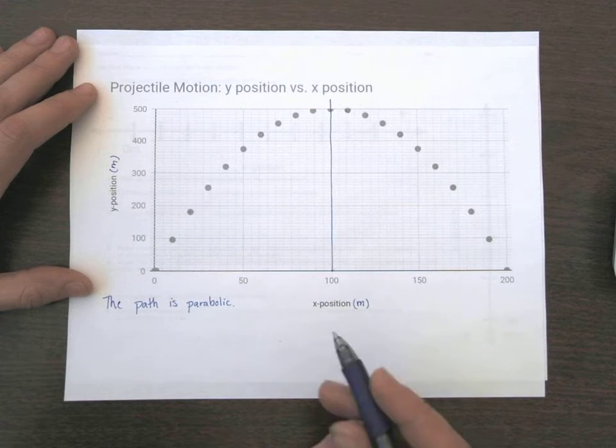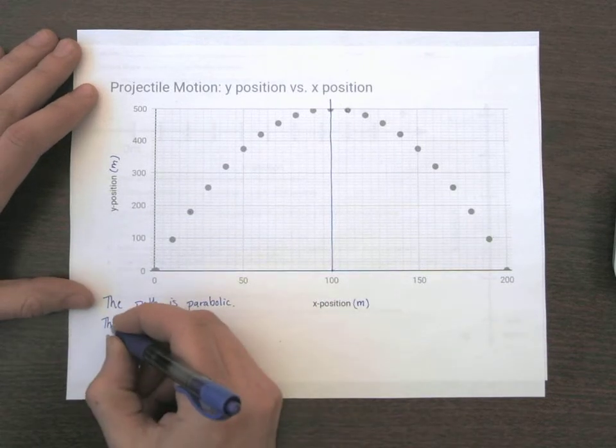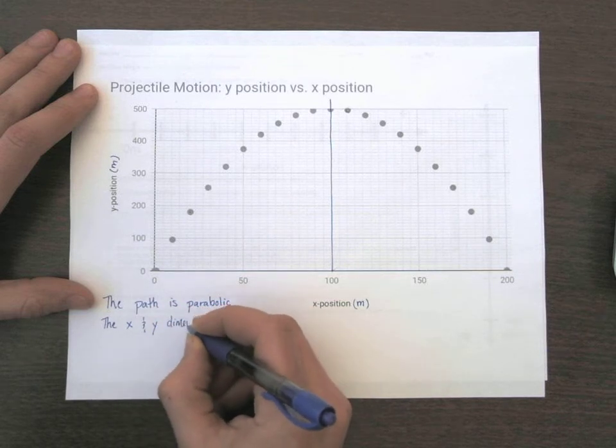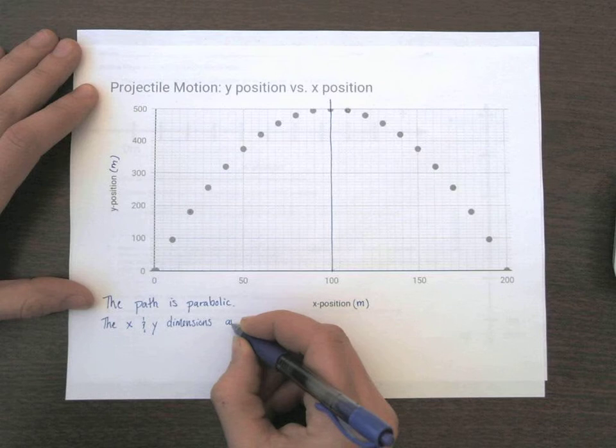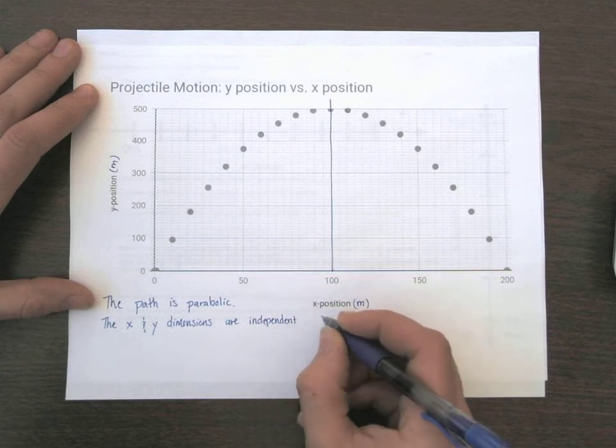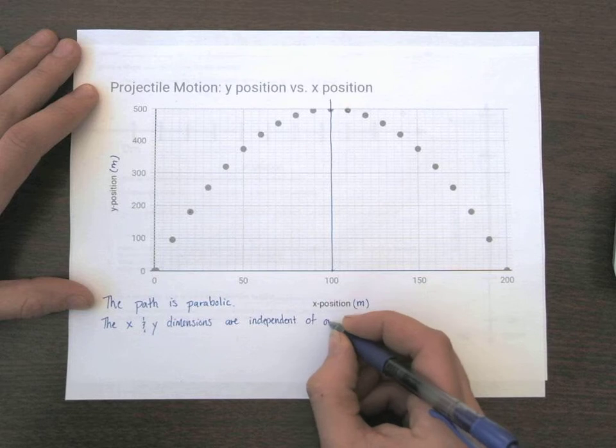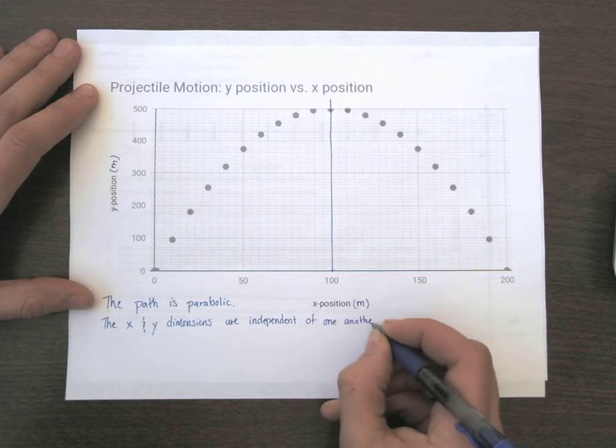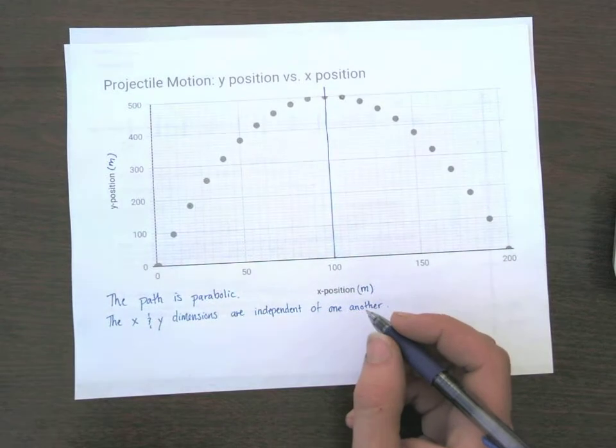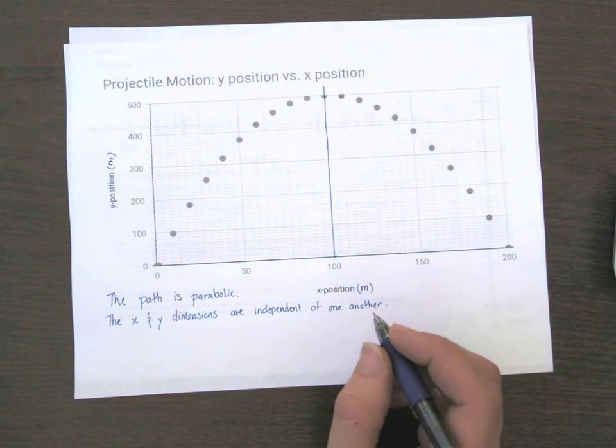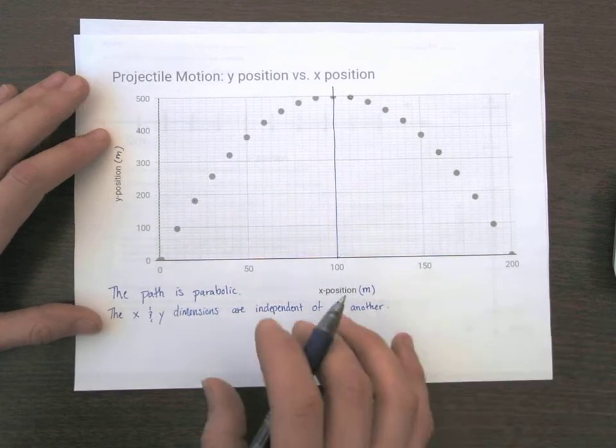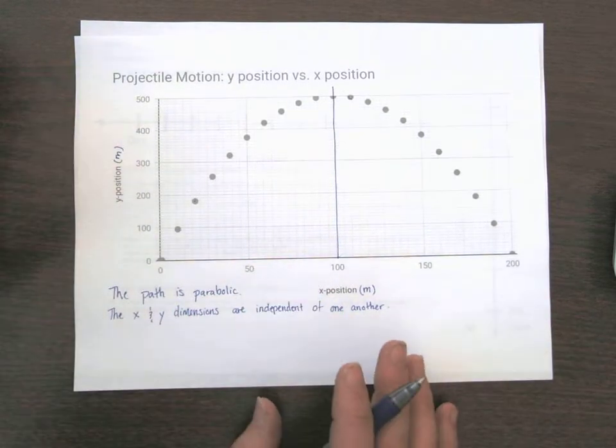Another thing we want to remember, the X and Y dimensions are independent of one another. This is going to be a really important point for this worksheet because this is going to help us basically answer some questions by taking the X position of the object and completely separating it from where it is in the Y at any time.